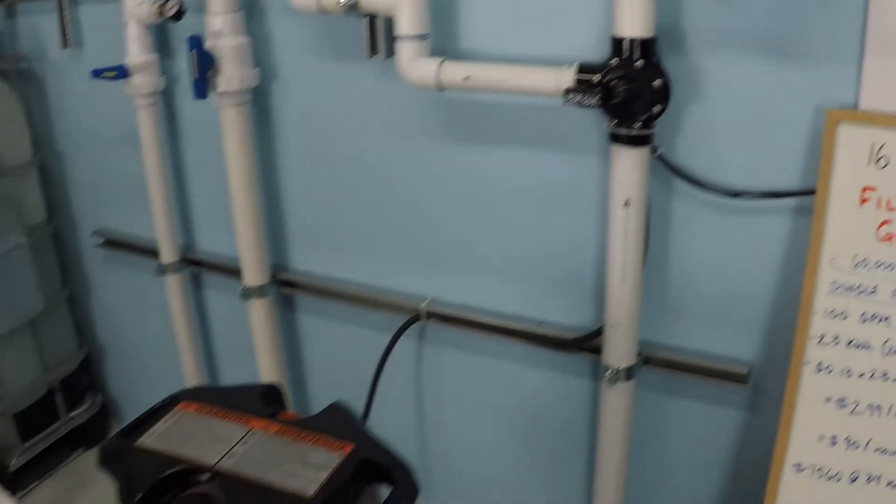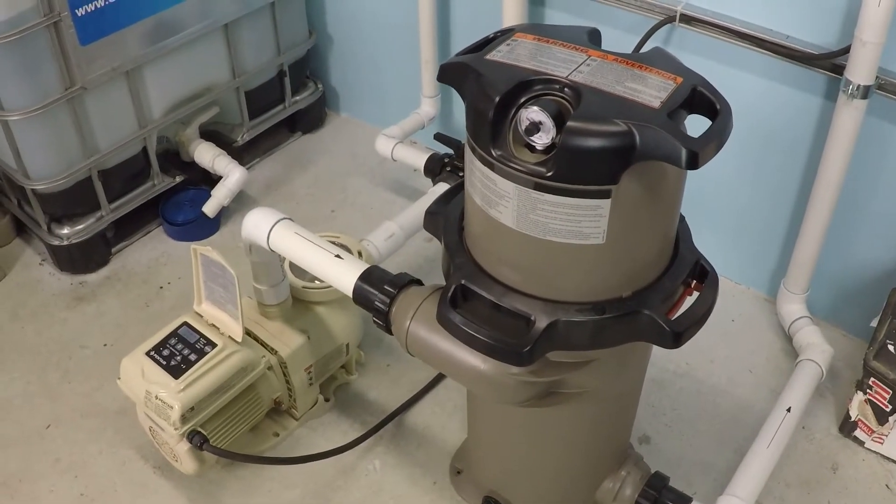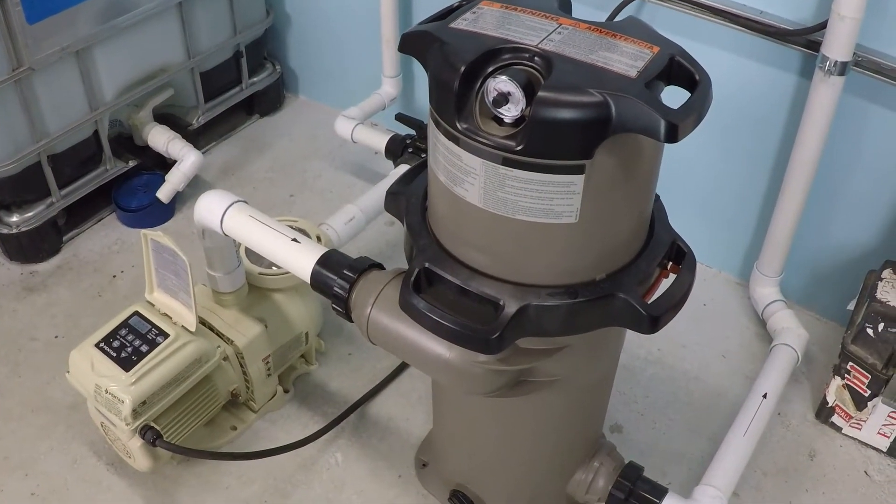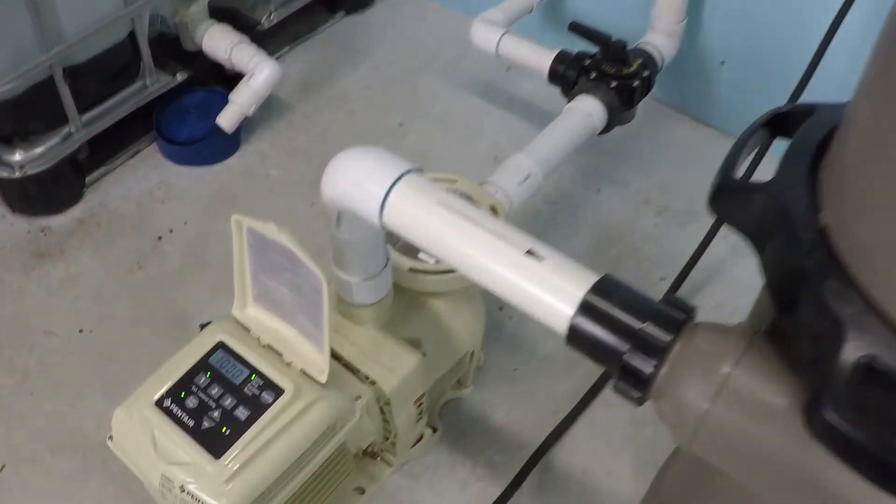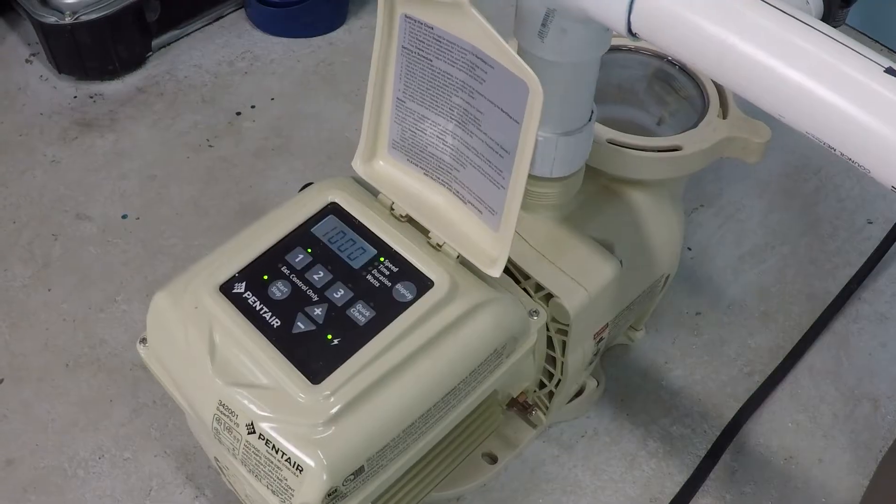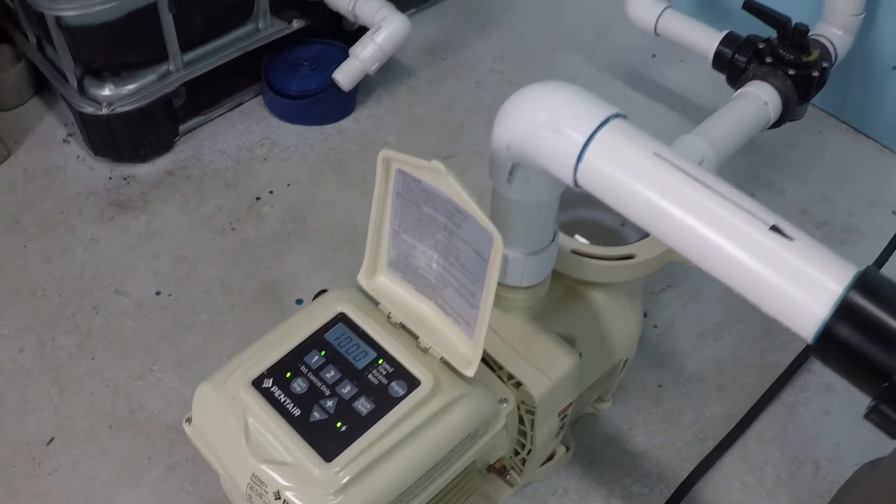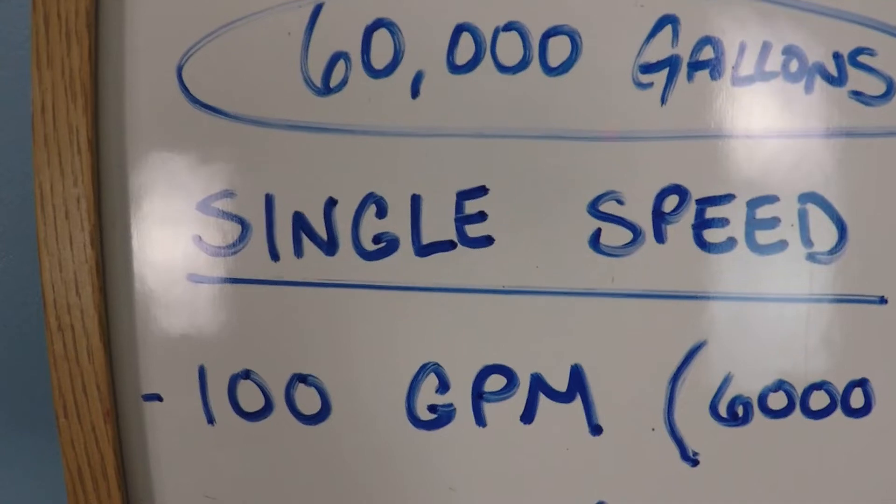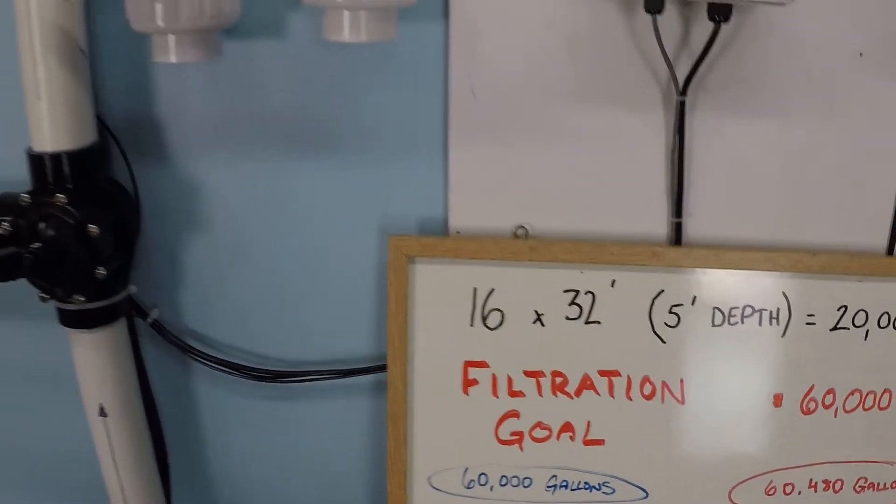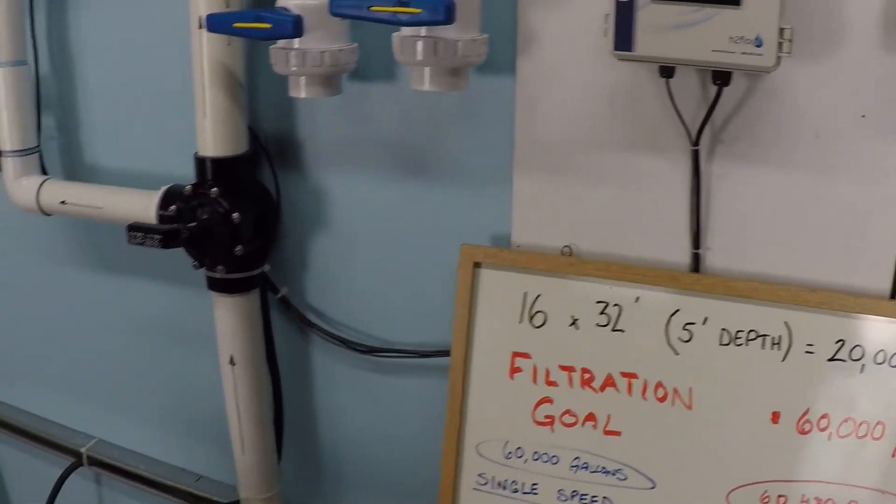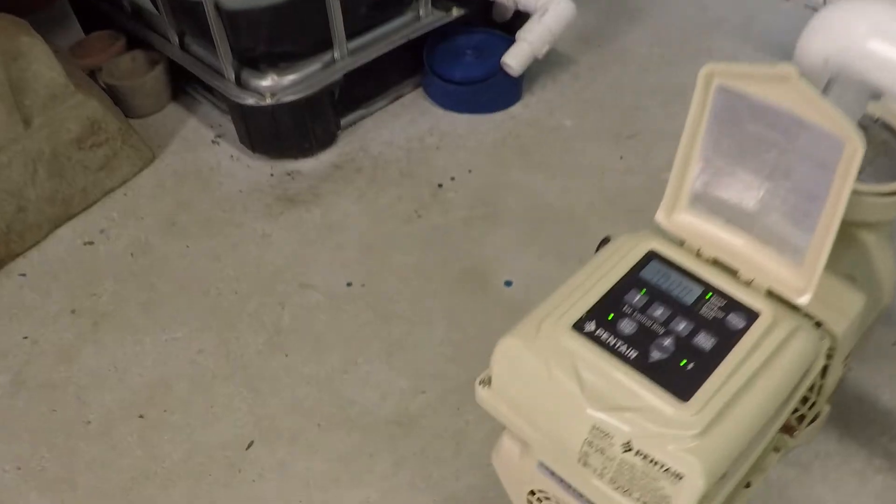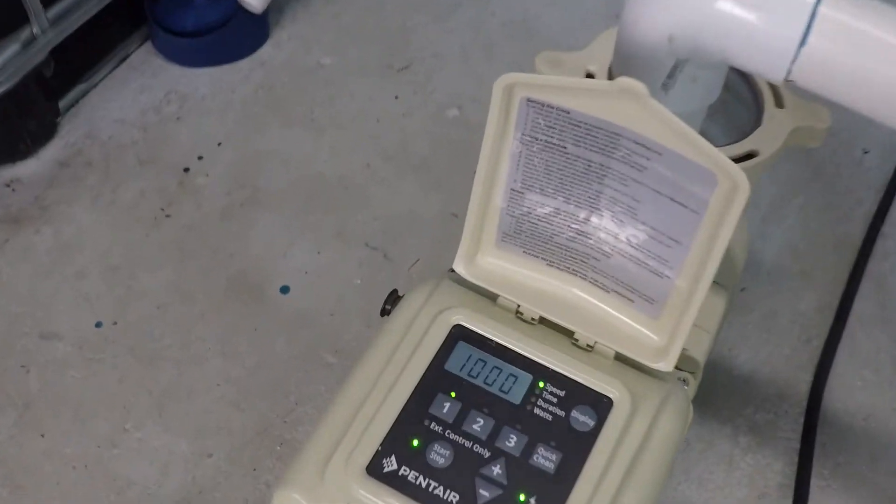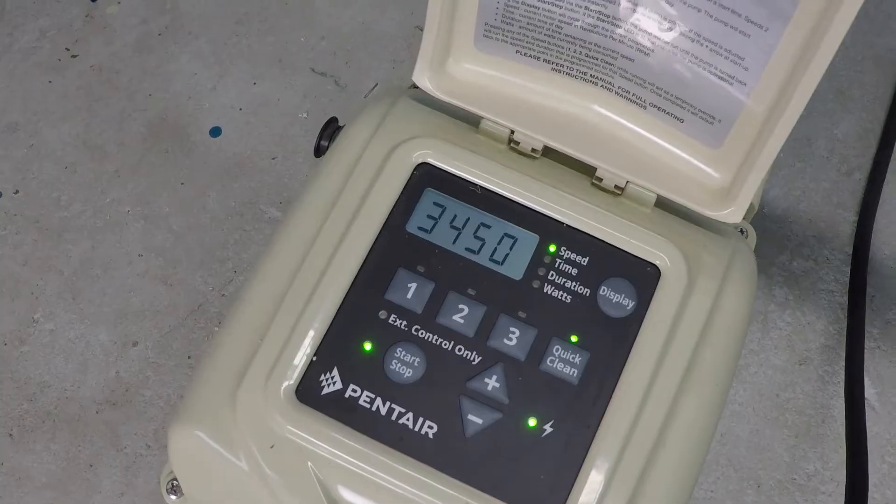So this represents an average swimming pool system. Every swimming pool system is different. Your numbers will be different, but these are real world working numbers that we can use. For example, using this pump here we're going to be testing on maximum speed 3450 RPM, and the reason we're doing that is if you have a single speed pool pump, that's the speed that you have. So let's take a look at what this pump, a one and a half horsepower, is able to achieve at 3450 RPM.